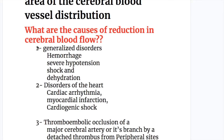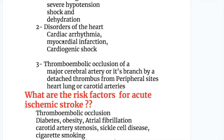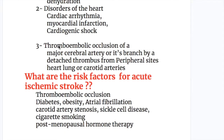What are the causes of reduction in cerebral blood flow? Number one, generalized disorders: hemorrhage, severe hypotension, shock, and dehydration. Number two, disorders of the heart: cardiac arrhythmias, myocardial infarction, and cardiogenic shock. Number three, thromboembolic occlusion of a major artery or its branch by a detached thrombus from peripheral sites like the heart, lung, or carotid artery.